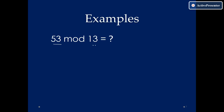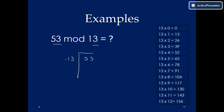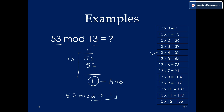Let us see another question: 53 mod 13. A is greater than B, so I will divide 53 by 13. You check the multiplication table of 13 for a number just below 53 — 13 into 4 is 52. So the remainder is 1. Hence, 53 mod 13 is equal to 1.